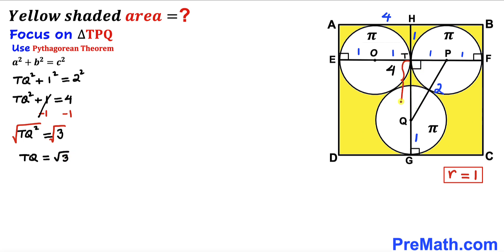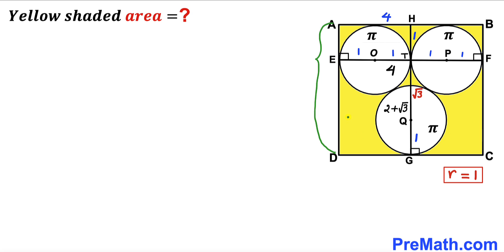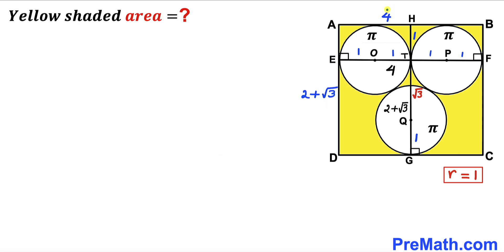So TQ = √3 units. The total length HG is the sum of the individual segments: 1 + √3 + 1 = 2 + √3. The side length AD of the rectangle equals HG, so AD = 2 + √3 units. Thus the two side lengths of rectangle ABCD are 4 and 2 + √3.